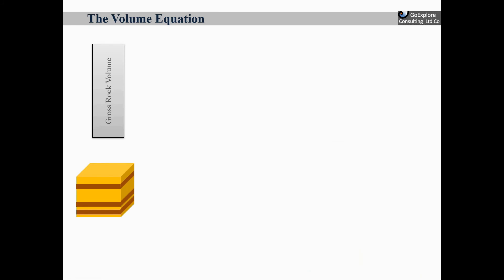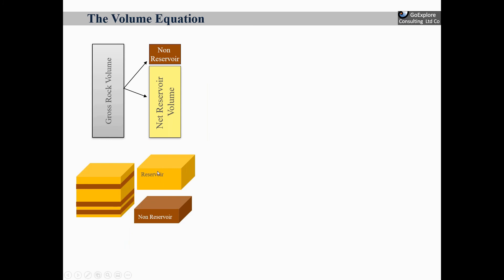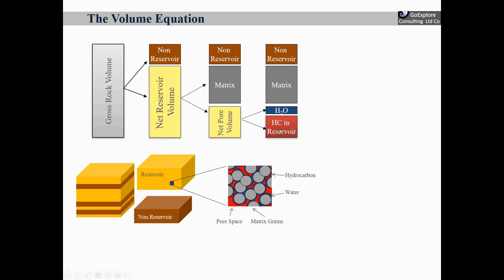The volume equation is really a very simple equation. We start with a gross rock volume — just the volume of a rock. The next step is to separate that volume into reservoir and non-reservoir. Then you define the pore volumes, because the reservoir consists of a lot of rock, but we're interested in the pore space between those grains. After that, you define how much hydrocarbons are in that pore volume, because the pore volume will initially be water-bearing. When a trap fills with hydrocarbons, it displaces the water, but it won't displace all of it.